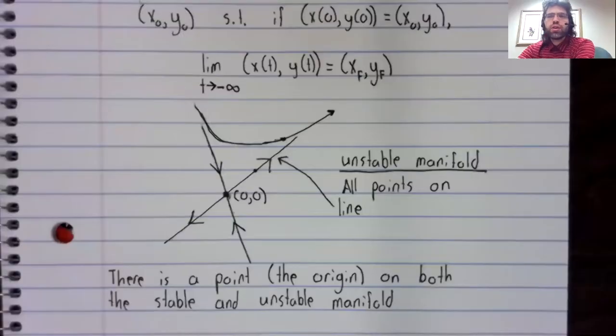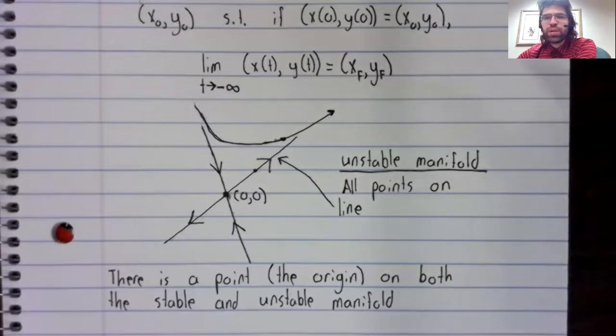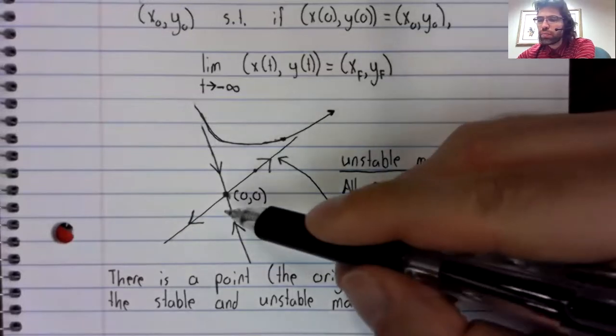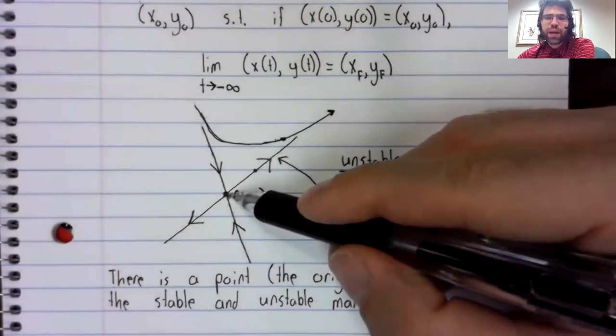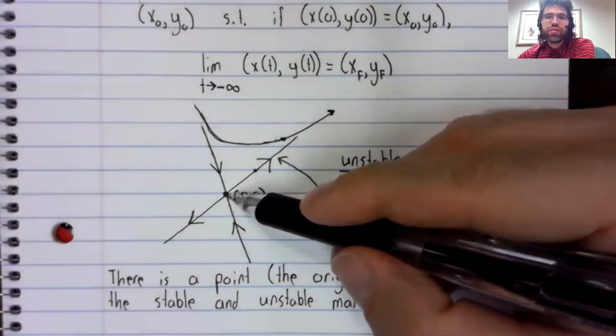We might think of stable and unstable as being opposites of each other, but it is possible to be on both the stable and the unstable manifold. The origin manages that feat.